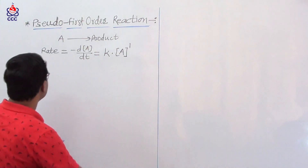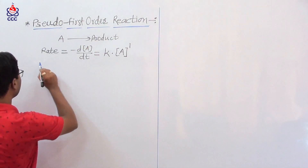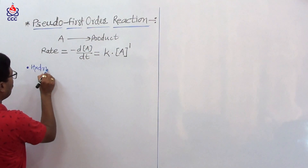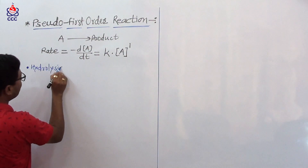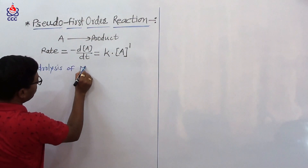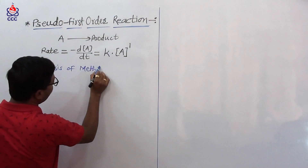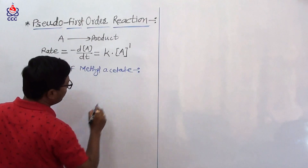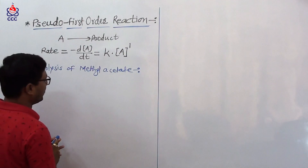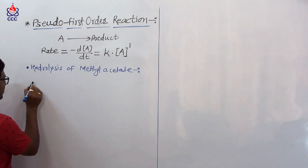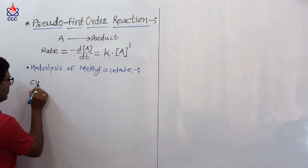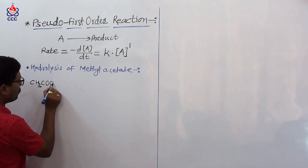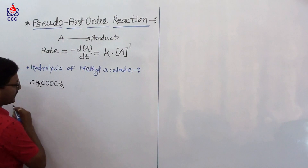Now consider an example: the hydrolysis of methyl acetate. Methyl acetate has the formula CH₃COOCH₃. This is the methyl acetate reacting with water.